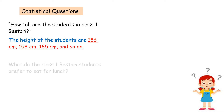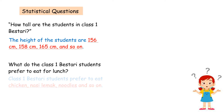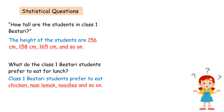Another example: what do the Class 1 Bestari students prefer to eat for lunch? Students prefer to eat chicken, Nasi Lemak, noodles, and so on. There is variability in the type of food the students prefer to eat.